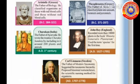Charaka wrote the treatise Charaka Samhita, including in it around 200 plants and animals. Next, John Ray. He is from England. He recorded more than 80,000 plants in the book Historia Generalis Plantarum, and he used the term 'species' for the first time.